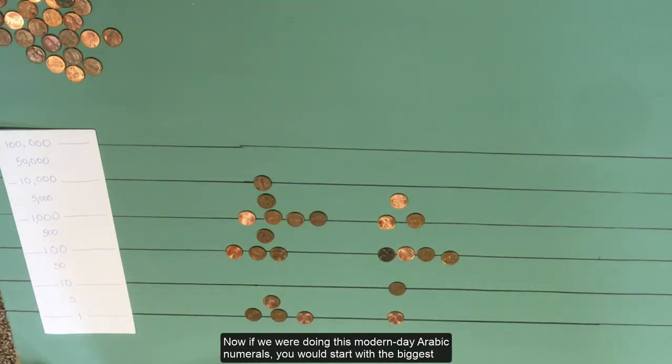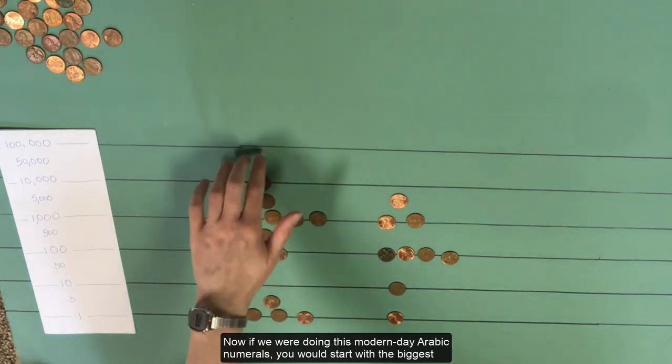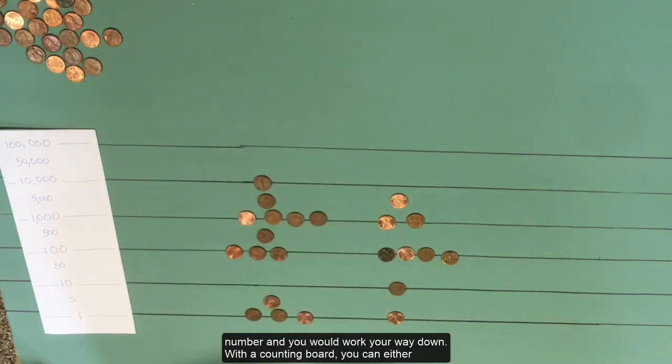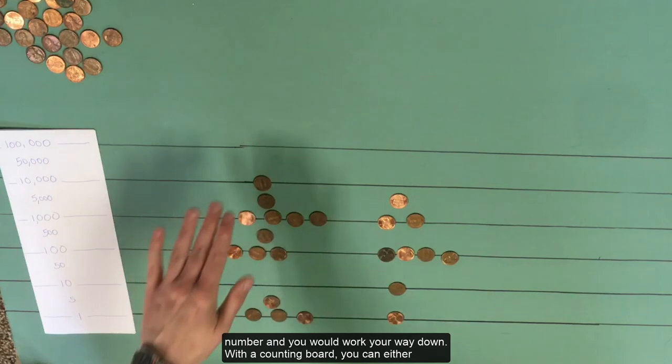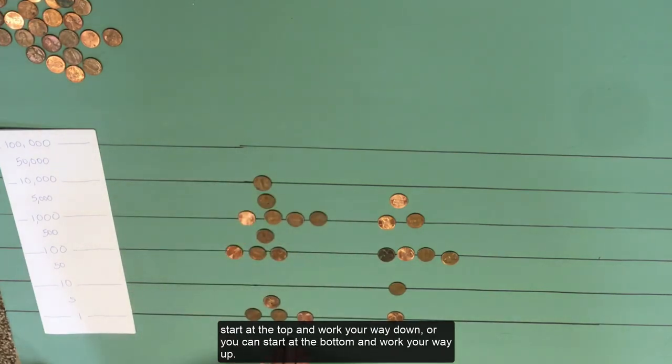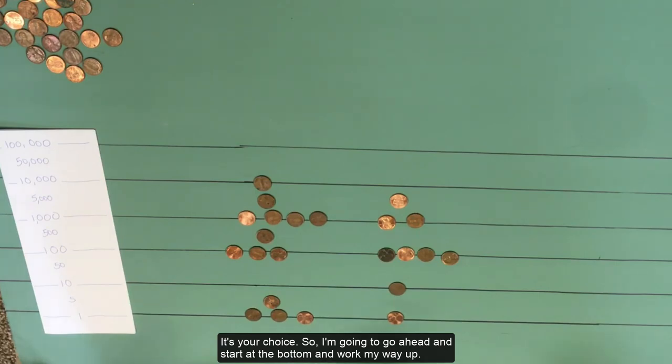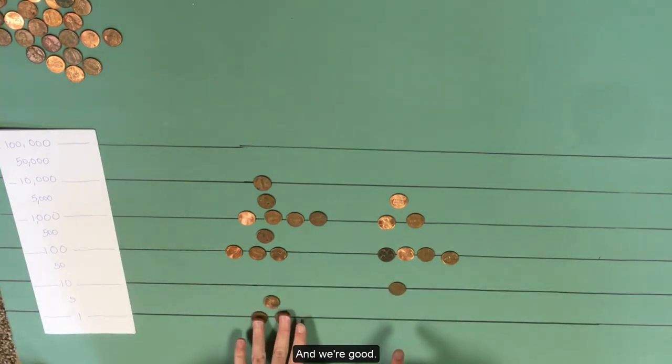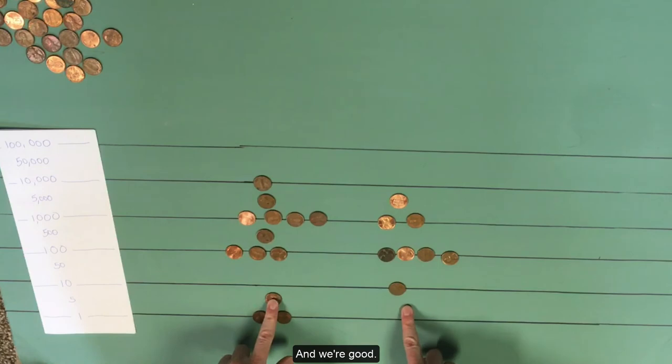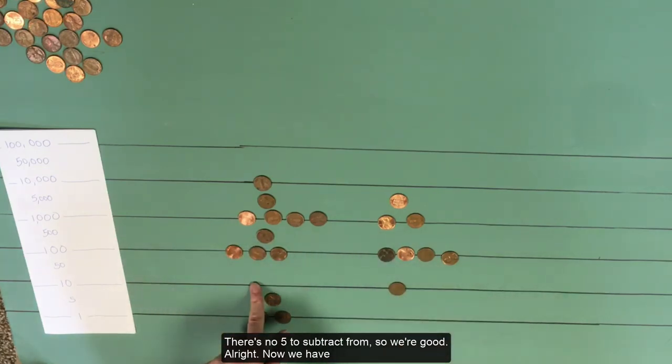Now, if we were doing this with modern day Arabic numerals, you would start with the biggest number and work your way down. With a counting board, you can either start at the top and work your way down, or start at the bottom and work your way up. It's your choice. So I'm going to go ahead and start at the bottom and work my way up. So we have three pennies here, one here. I'm just going to take one and we're good. There's no five to subtract from. So we're good.